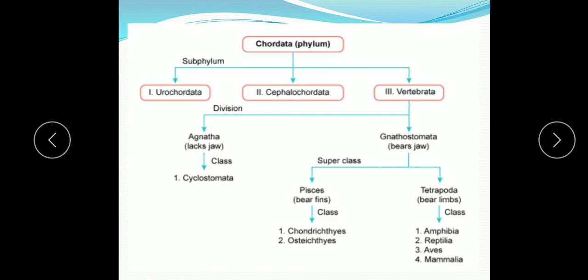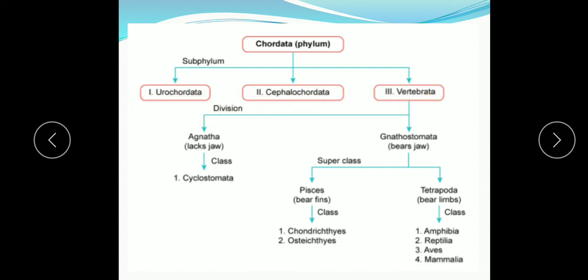Now we will study the classification. Phylum Chordata has been divided into three sub-phyla: Urochordata, Cephalochordata, and Vertebrata. This division is done on the basis of the presence of notochord in them at different stages of their life.